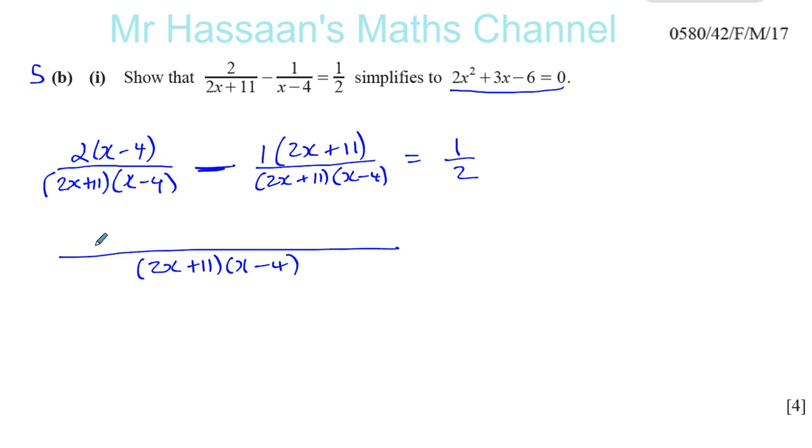So here we have on this side 2 times x minus 4, which is 2x minus 8. Now, I'm not going to multiply this side out until I've written it out properly because of that minus sign. If there was no minus sign here, I would have just multiplied it out.